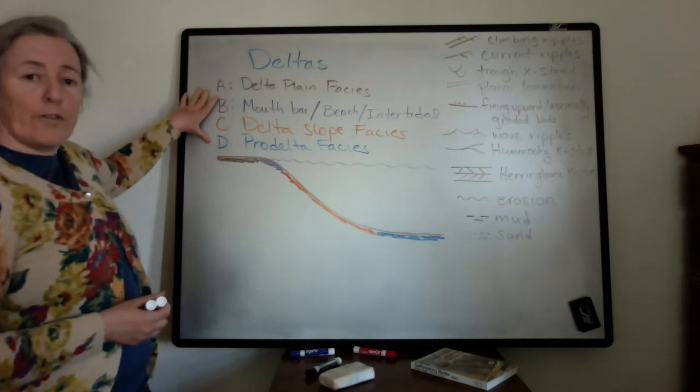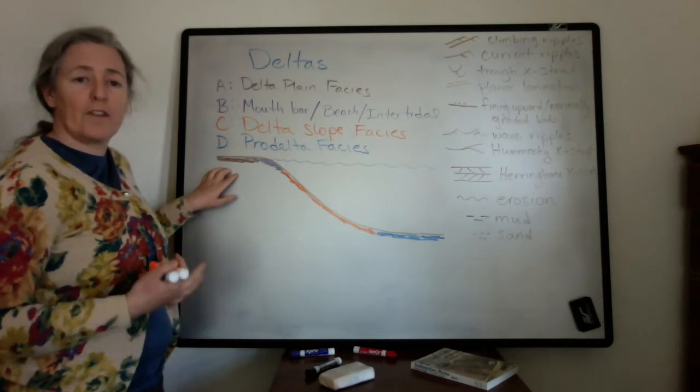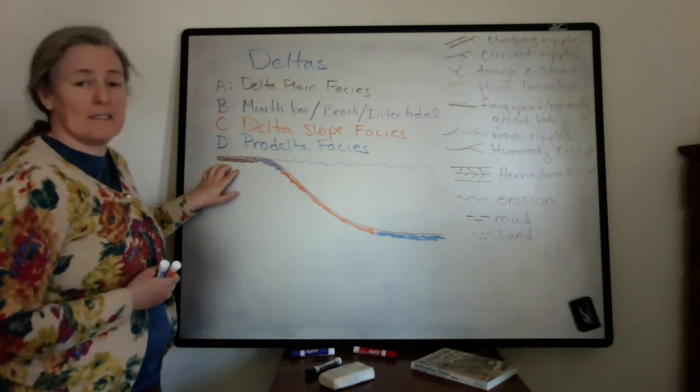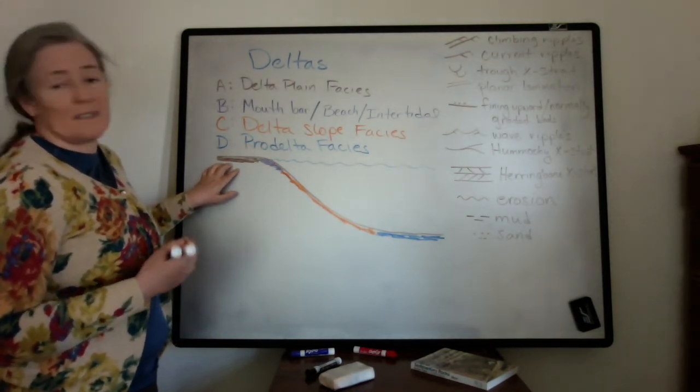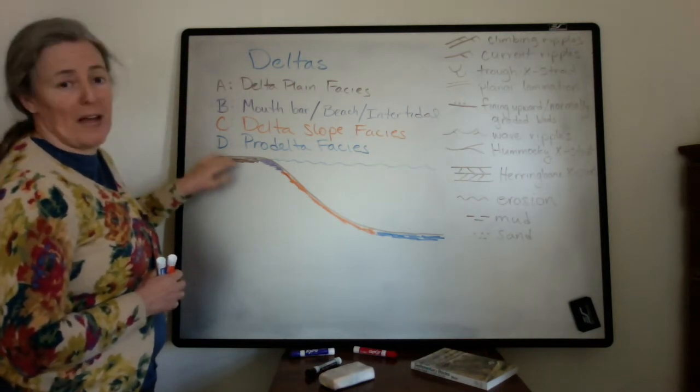So I've defined four facies here. One is the delta plain facies, which will include a lot of the meandering river type facies, plus lakes or bays, typical of the very flat top of the delta.